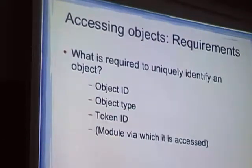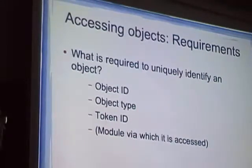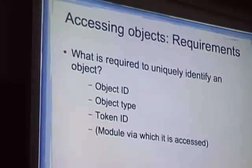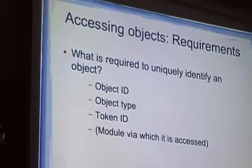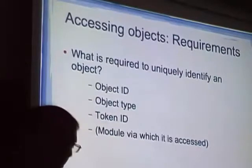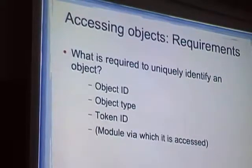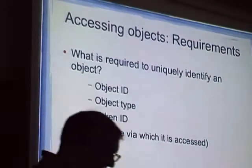What requirements do we have for that? How can we identify an object in a unique way? An object has an object ID. In the context of PKCS11, every object has an object ID, it has a type — it can be a certificate, a private key, or some other data. There is also a token ID, which says this object resides on this token, so you don't confuse it with a different object on another token that might have the same ID. We also want to know how we're going to access this object — via which module. If you use OpenSSL and want to access a PKCS11 card, you want to specify that you want to access this module via the OpenSSL interface.